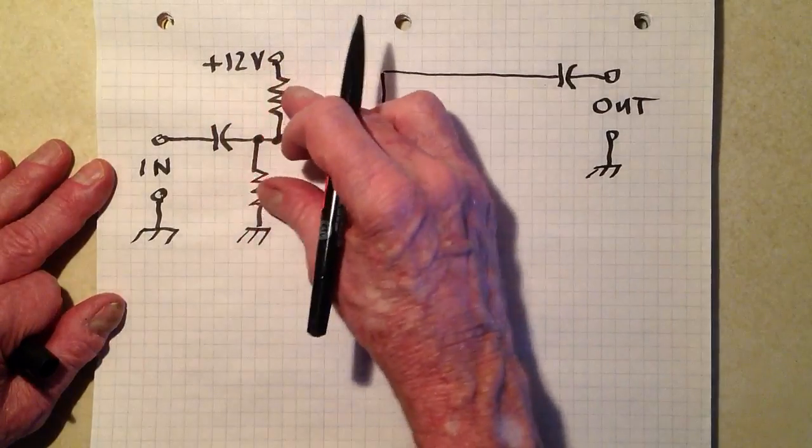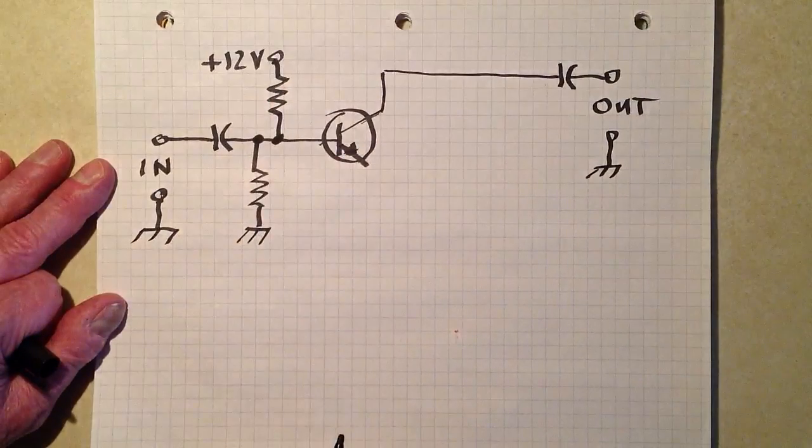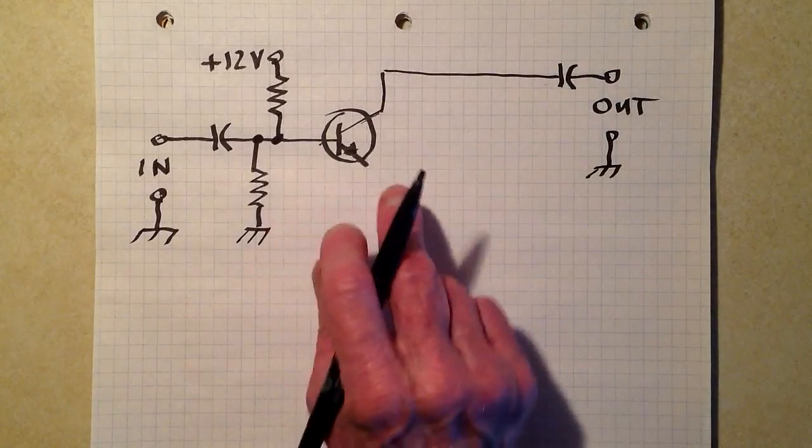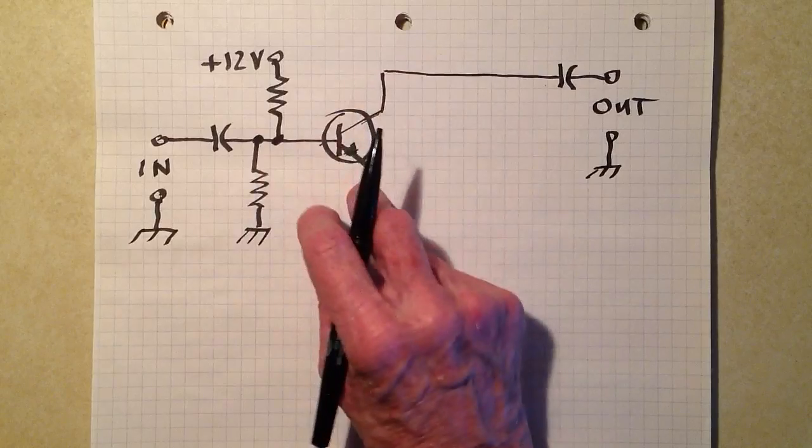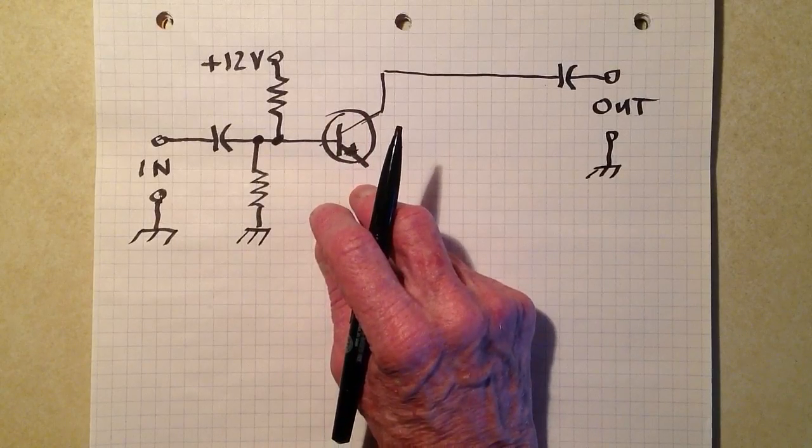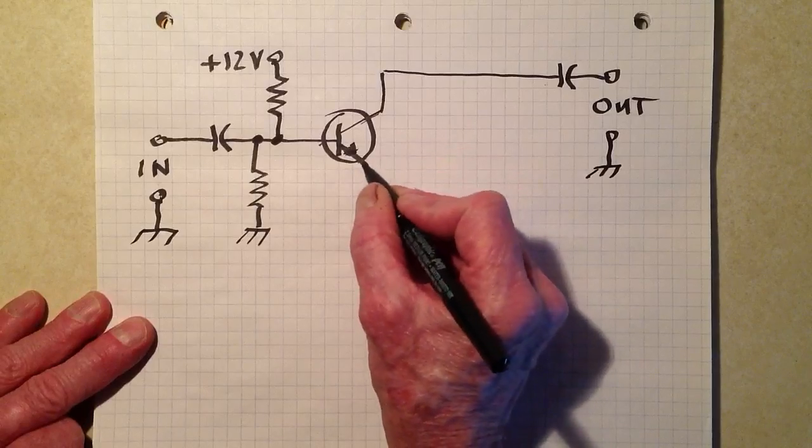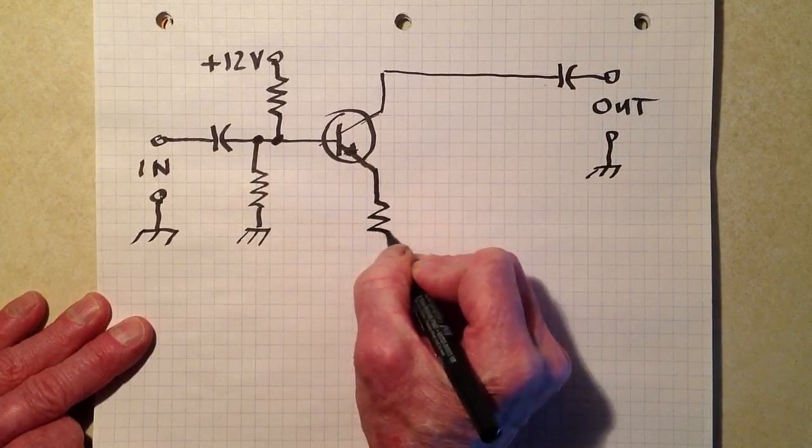Now the values of these capacitors should be chosen in such a way that this base here will be biased in such a way as to produce a class A amplifier. That means that it will conduct current, the transistor will conduct current during the entire input cycle.